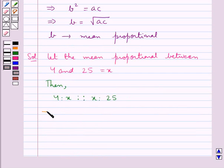So now the product of extremes 4 multiplied by 25 is equal to product of the means, that is x multiplied by x, which is x squared.